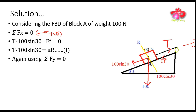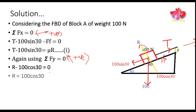If we consider the summation of forces in the y-direction equals zero, taking the direction of the normal reaction as positive, we get: N minus 100 cos 30 degrees equals zero. Solving this, we get the value of the normal reaction as 86.60 Newton.